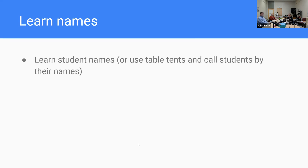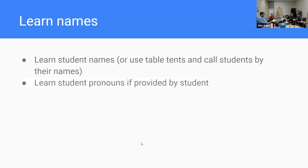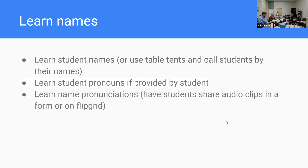Learning students' names is important — even in a big class, using something like a table tent, which is just a piece of paper folded over with their names clearly written on it, and calling students by their names can really create that sense of belonging and connection in the classroom. We have a workshop coming up where Kristen will be presenting on learning students' pronouns and so forth. Also learning name pronunciations — a simple way of doing it, especially in a larger class, is to have students share audio clips in a form or using Flipgrid or something similar, so you can go back and refer to that if you forget.